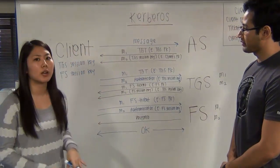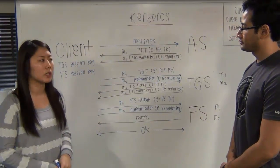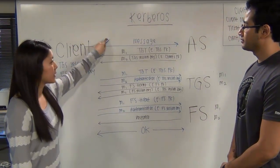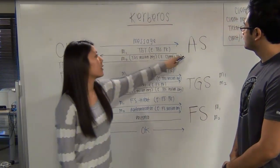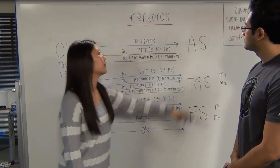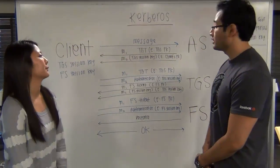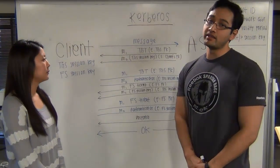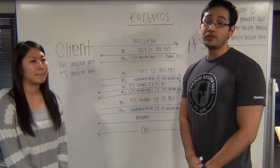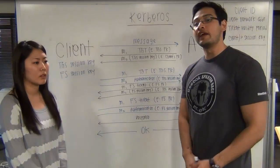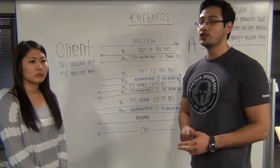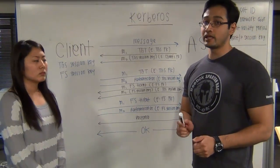The client will type his or her ID and password and send a request message to the authentication server. The authentication server will then look in the database to see if the user exists, and if the user exists, it will send two messages back to the client.